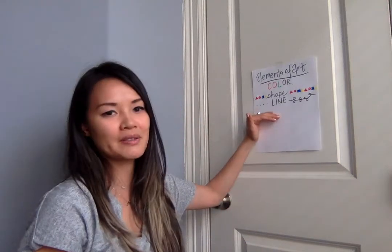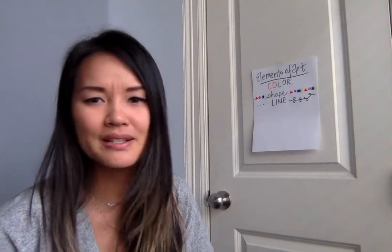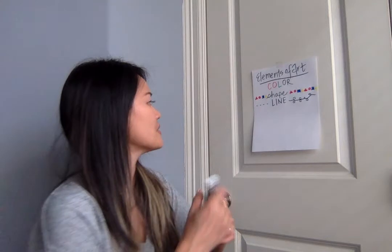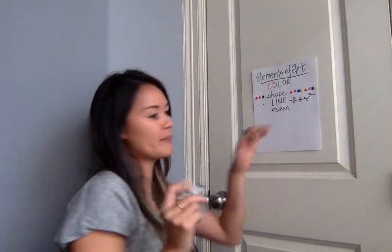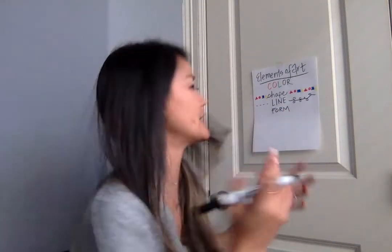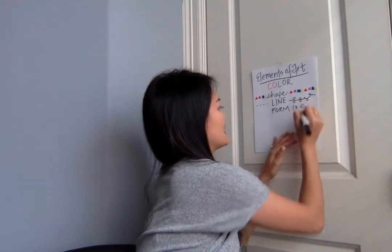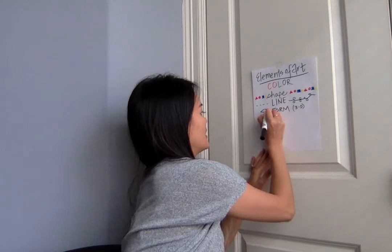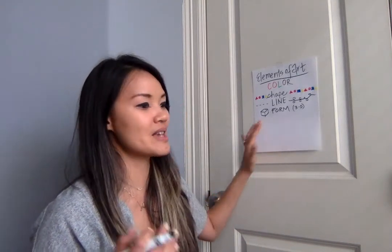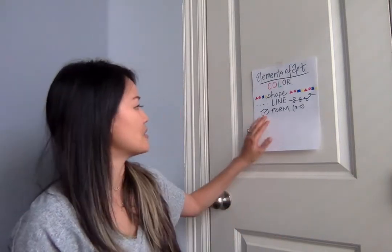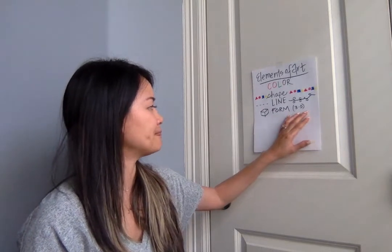There are many different types of lines — we learned about that in second grade. Another element is form. When I think of form, I think of 3D, so anything that's 3D. It doesn't have to be a physical object — it can be something like dance or playing a musical instrument.